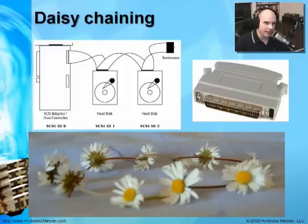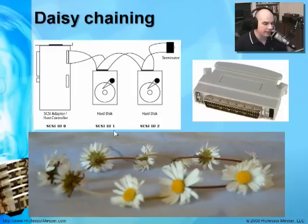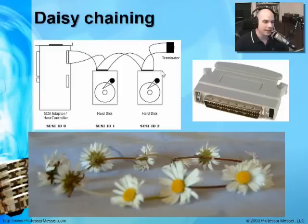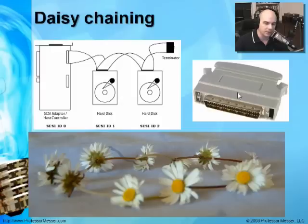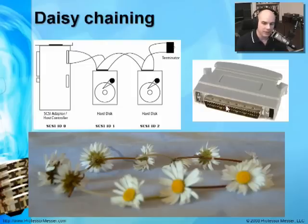The way that SCSI devices plug in — especially externally — is called daisy chaining. Here's a good example: from a SCSI adapter, we plug into hard disk number one, which has a SCSI logical unit identifier of one; this one has an identifier of two; and on the end of the cable is a terminator so we won't get any reflection back. It's called daisy chaining because it's like chaining daisies together. I also have a picture of what one of those external terminators looks like — you can buy these, though they often come with SCSI devices or a SCSI adapter.